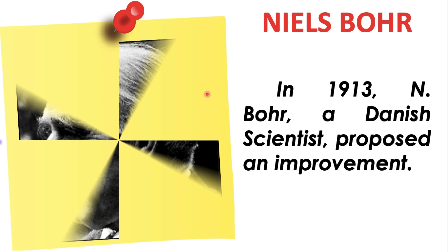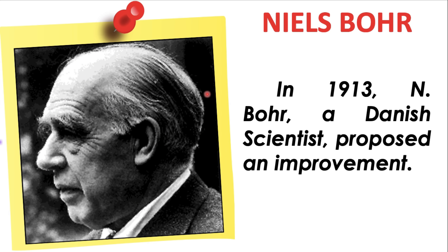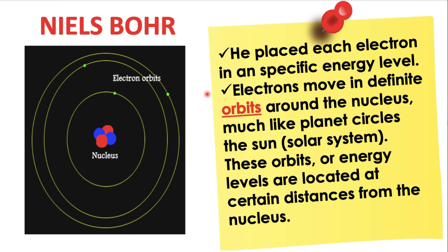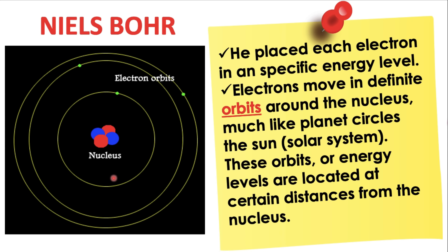Niels Bohr. In 1913, Niels Bohr, a Danish scientist, proposed an improvement. He placed each electron in a specific energy level. Electrons move in definite orbits around the nucleus, much like planets circle the sun or our solar system. These orbits, or energy levels, are located at certain distances from the nucleus. This is his atomic model.